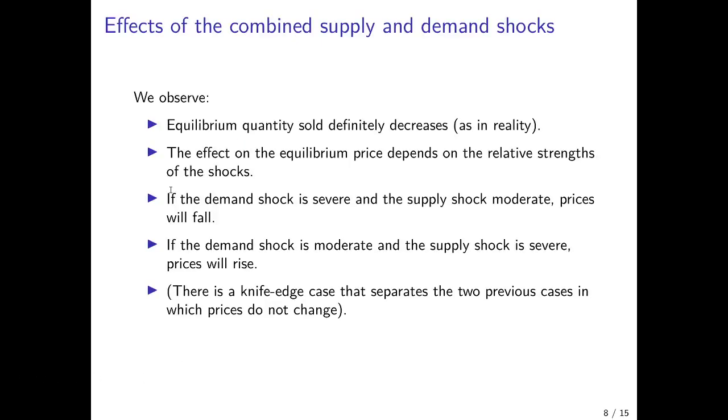So we can summarize what we've learned. Negative demand shocks and negative supply shocks combined will always lead to a situation where equilibrium quantity traded definitely decreases. This was also the case in reality in the COVID-19 pandemic in the car market. The effect on the equilibrium price, however, depends on the relative strength of the different shocks. If the demand shock is severe and the supply shock comparatively moderate, prices will fall. If it's the opposite, then prices will rise.